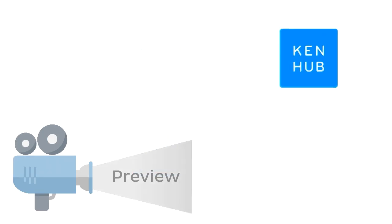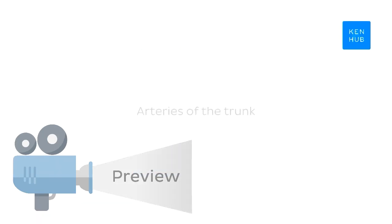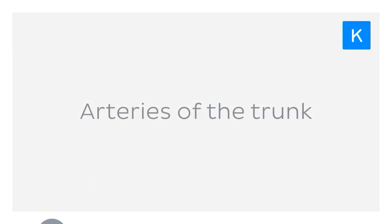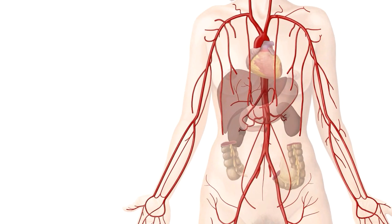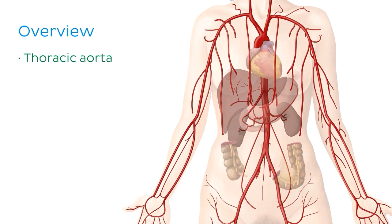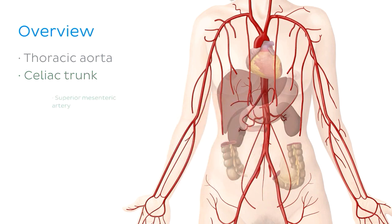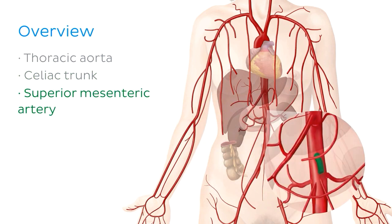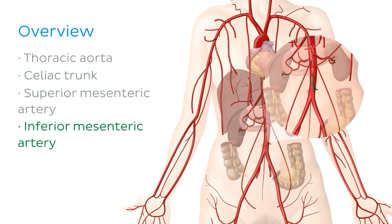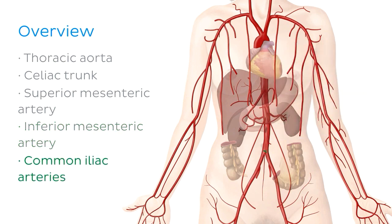Hey everyone, this is Nicole from KenHub and in this video we're going to look at the blood supply to the trunk. In this tutorial we're going to cover the thoracic aorta, the celiac trunk, the superior mesenteric artery, the inferior mesenteric artery, and the common iliac arteries and their associated branches.